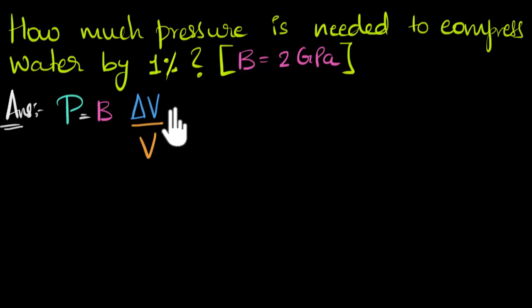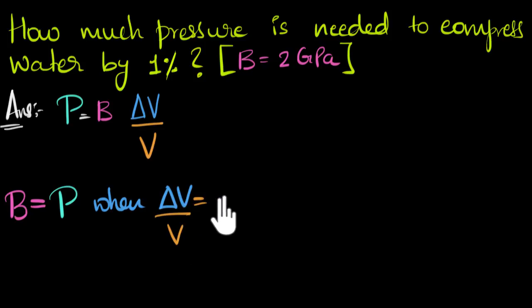The first thing we'll do is understand this equation a little bit better, understand the bulk modulus more intuitively. So for that, we could say that bulk modulus will be equal to pressure when this number becomes one, when delta V over V becomes one.